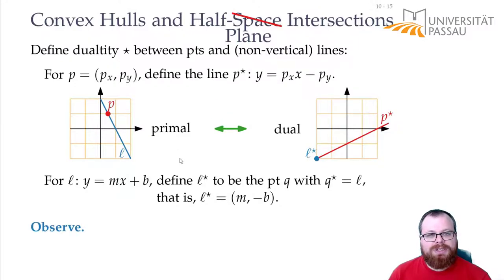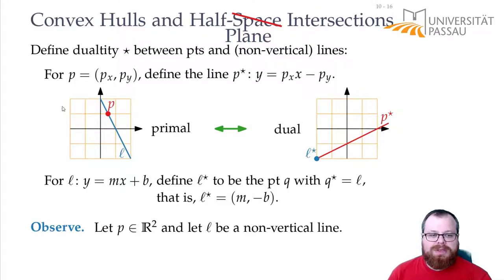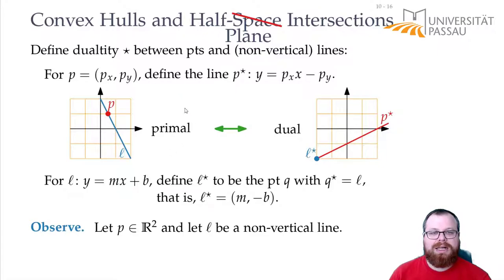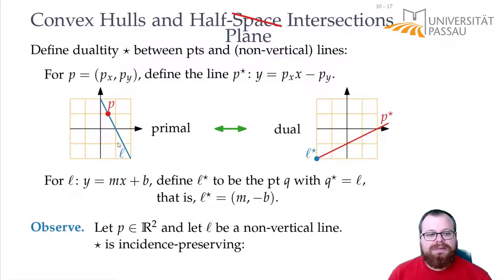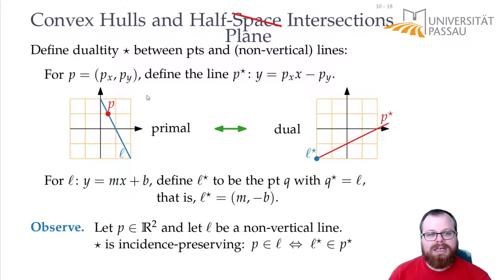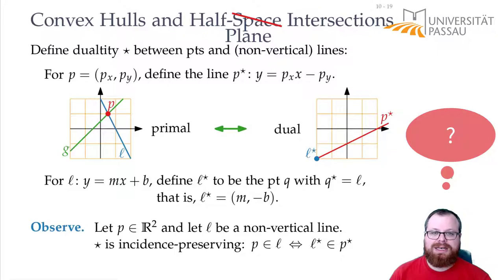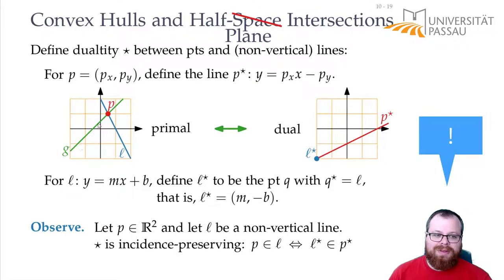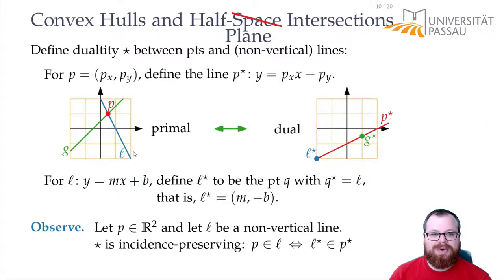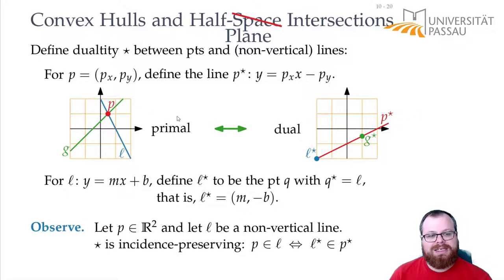First, we want to have some observations. If we have any point on the plane and any non-vertical line — say a point P and a line L — what does that mean in the dual? If P lies on L, then in the dual, L-star will also lie on P-star. So it is incidence-preserving. In particular, if I have another line G that also goes through P, then G-star also has to be a point on the line P-star. So whenever two lines intersect, their duals are two collinear points, and the line through them is exactly the dual of the intersection point.